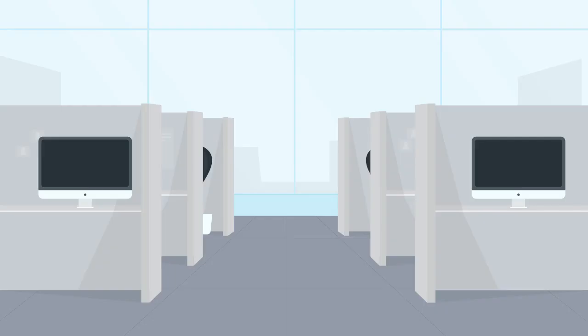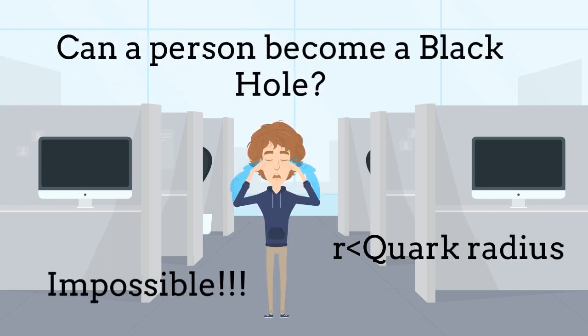But wait a minute. Could then a person also become a black hole? This is certainly impossible. The reason is that for this to happen, the total mass of a person, of around, let's say, 100 kg, would have to be compactified to a scale shorter than the scale of a quark. So, impossible.